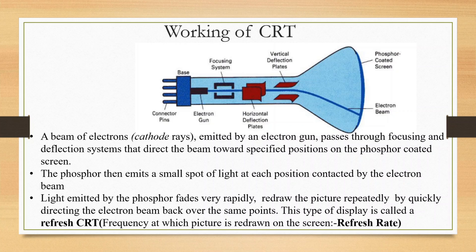So the concept is clear: the electron beam passes through the focusing and deflection system and is directed to a specified position on the phosphor-coated screen. The phosphor emits a small spot of light, but the light fades very rapidly.